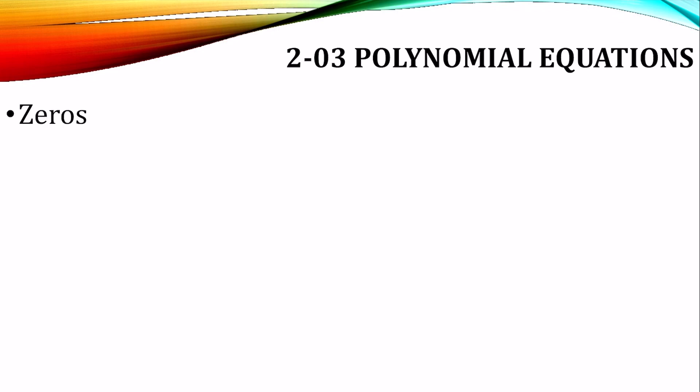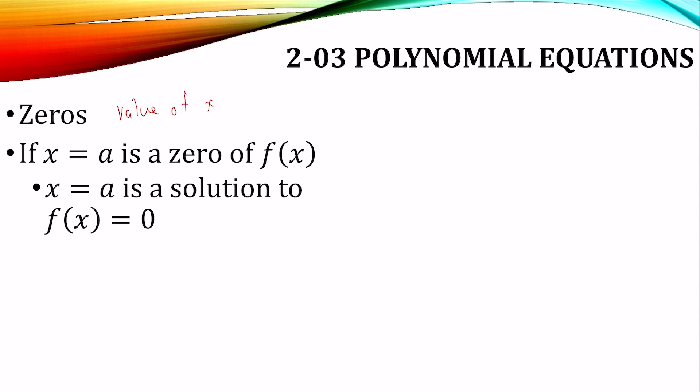Polynomial functions have zeros. What we mean by that is if x = a is a zero, then x = a is a solution to the function when it equals zero. So a zero is just the value of x that makes the function equal zero. That is the zeros.